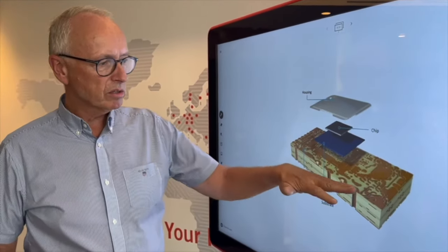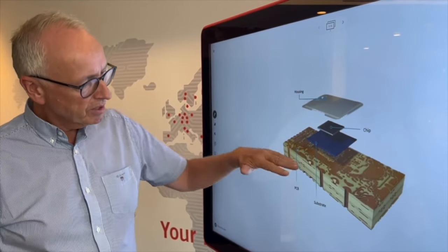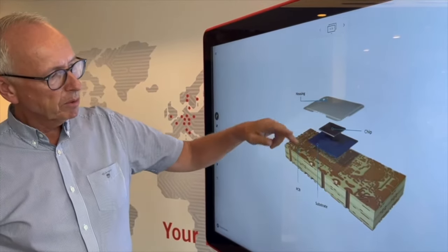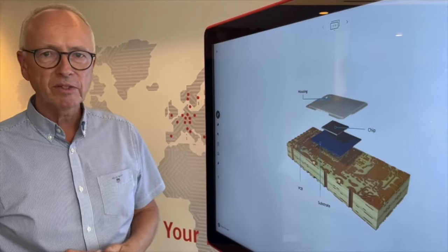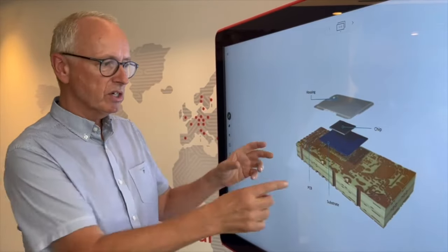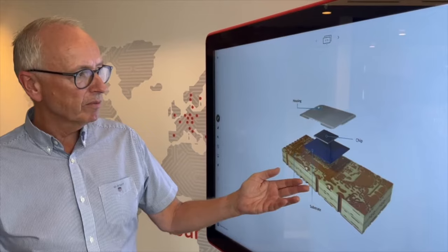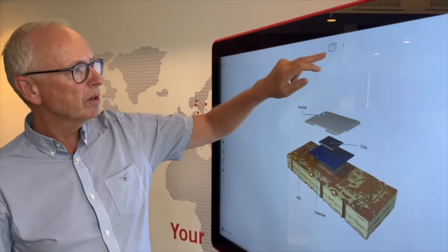What is going to happen is that this PCB will be able to have the chip directly assembled on the PCB. To do that we need a miniaturization of the PCB. To explain what we want to achieve here, I'd like to go to another picture.